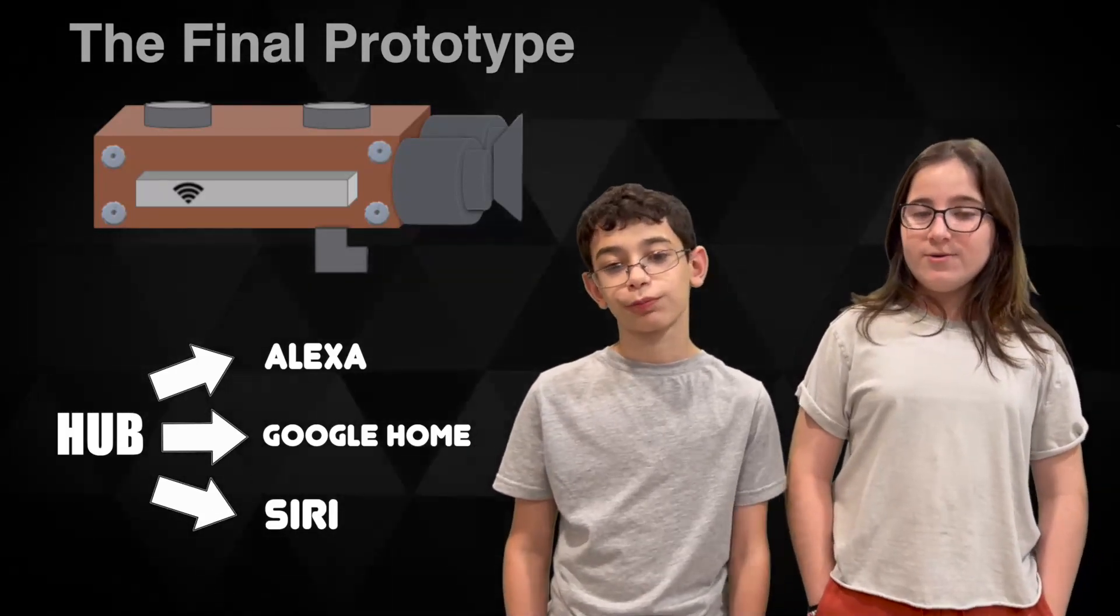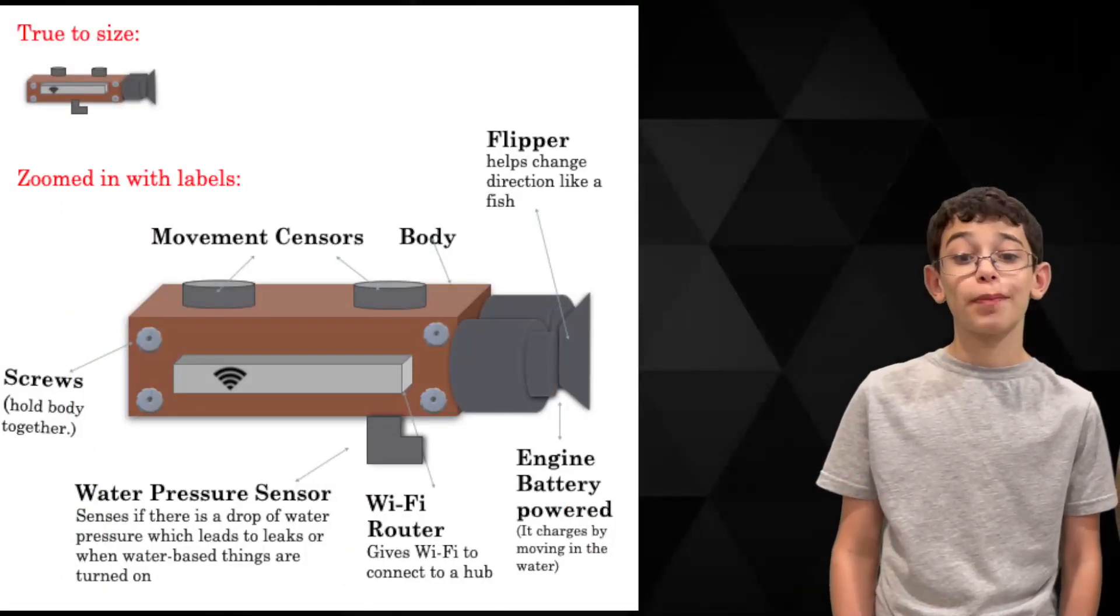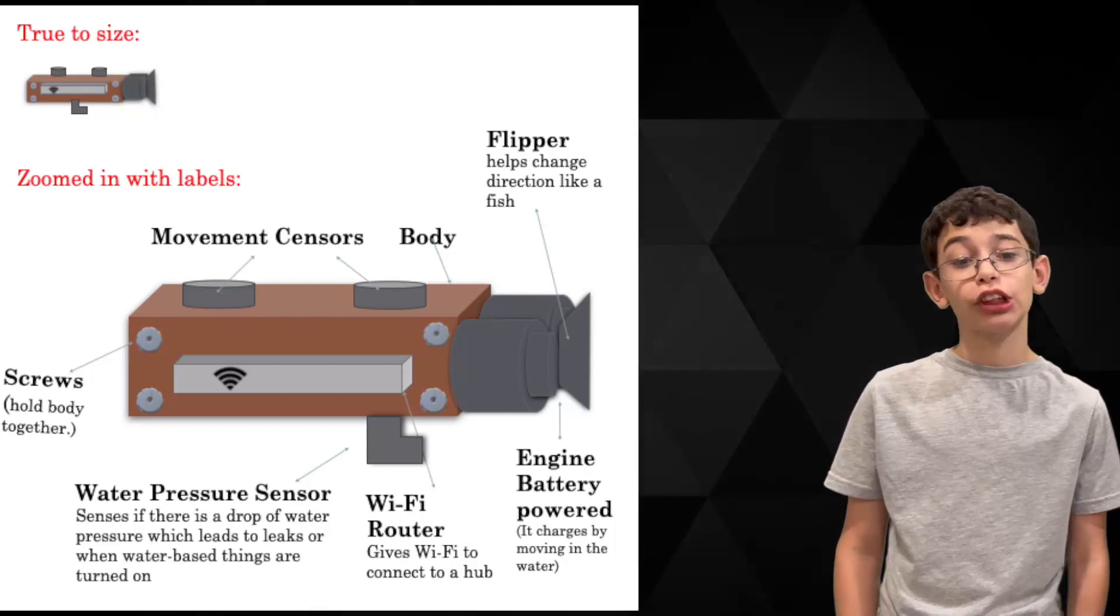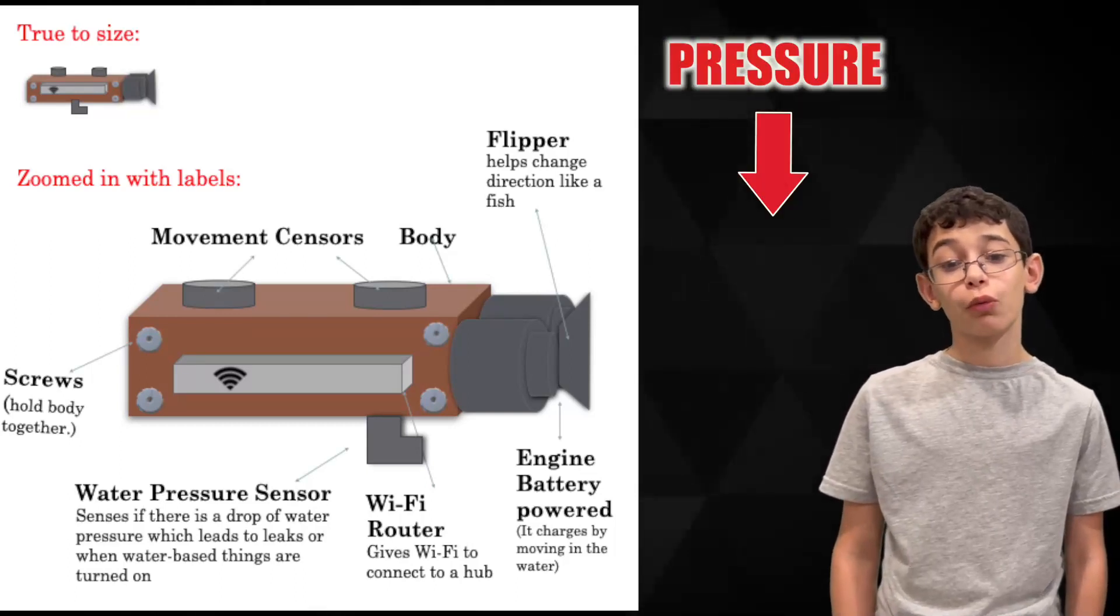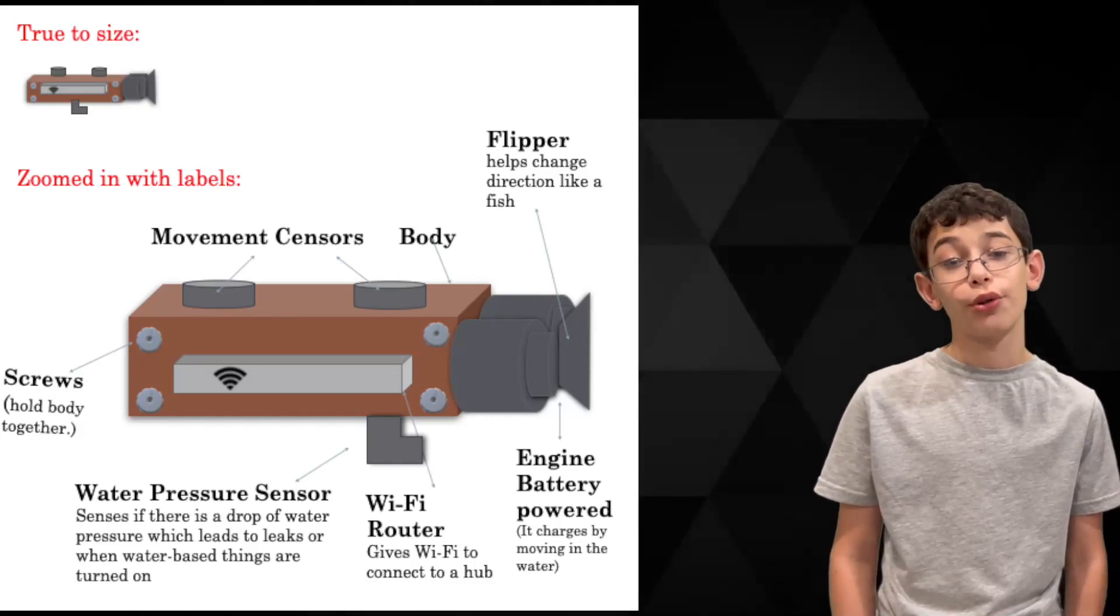This robot will be moving around your water pipes 24-7. This robot is going to be programmed especially for your house so it will know every place in the building. If it detects a drop of pressure, it's either when the water source is turned on or there's a leak. Then it alerts the owner through the hub.